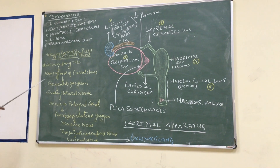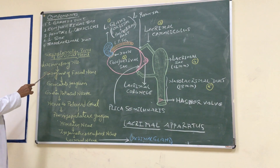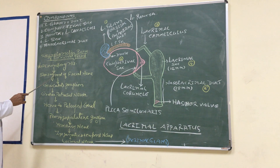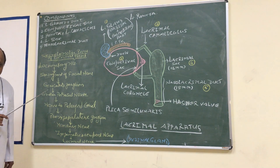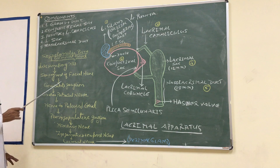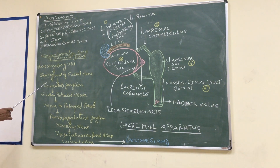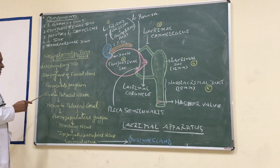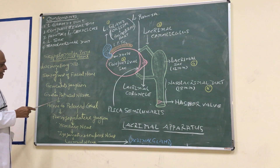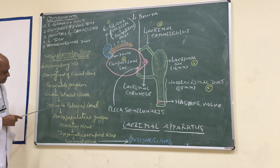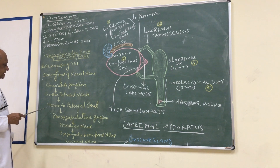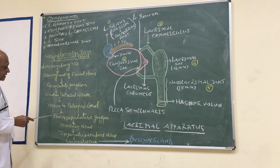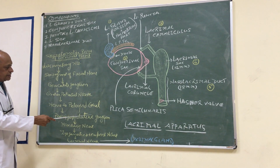We will discuss details about the pons afterwards. After arising from the lacrimal salivatory nucleus, the preganglionic fibers join the sensory root of the facial nerve — also called the nervus intermedius. The fibers then join the geniculate ganglion, from where they run in the greater petrosal nerve. After joining the greater petrosal nerve, the fibers pass through the nerve of the pterygoid canal, which ultimately reaches the pterygopalatine ganglion.